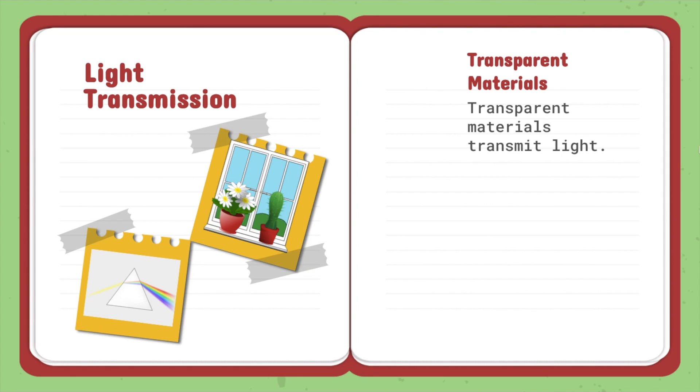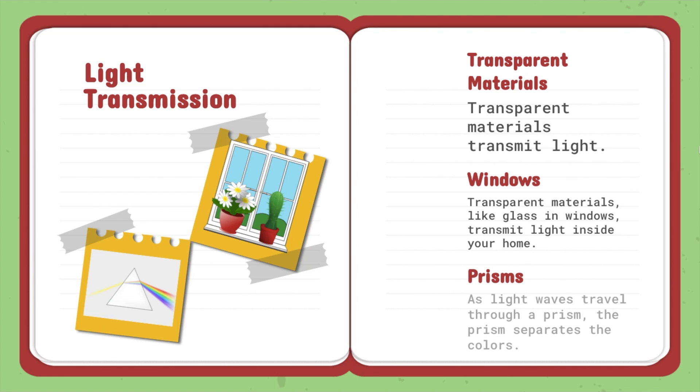Transparent materials transmit light. So an example of that would be windows. Transparent materials like glass and windows transmit light inside your home. Also prisms. As light waves travel through a prism, the prism separates the colors. Different colors of light are created by different light waves. And that's how a prism works.